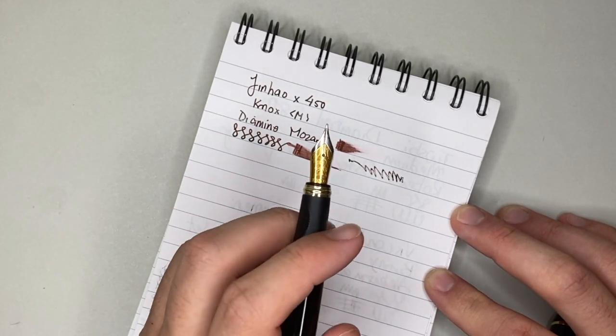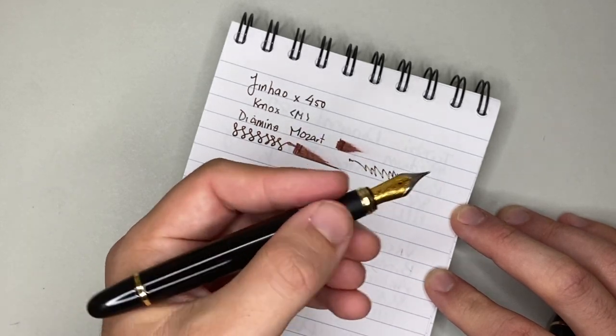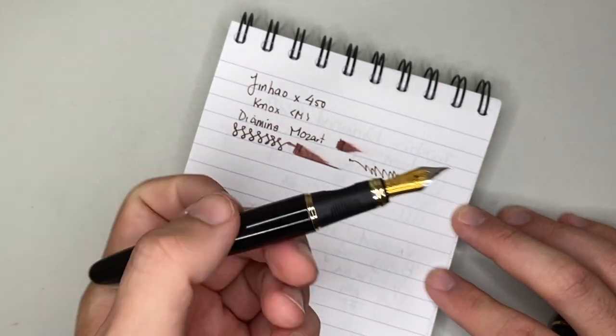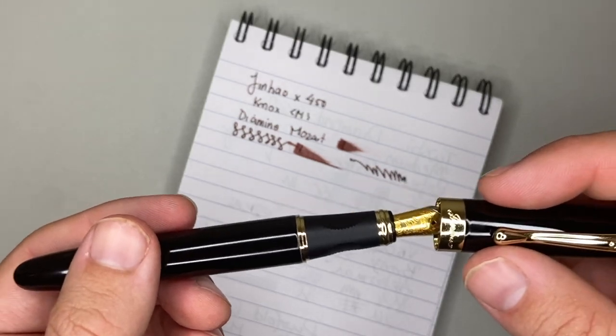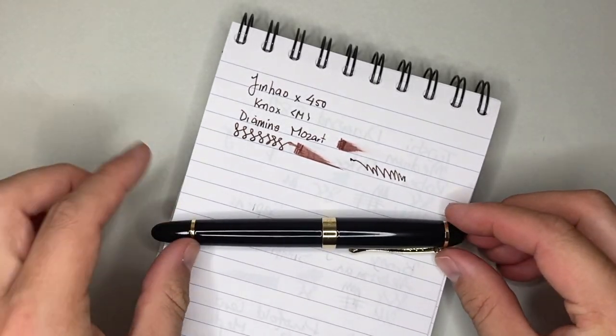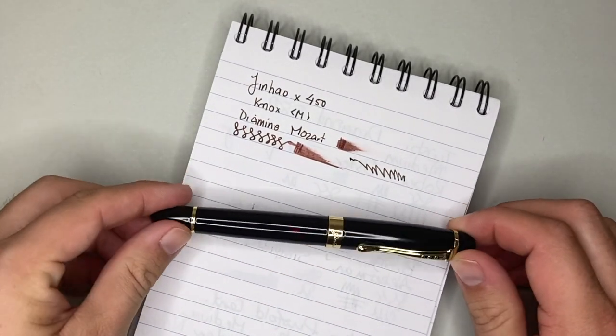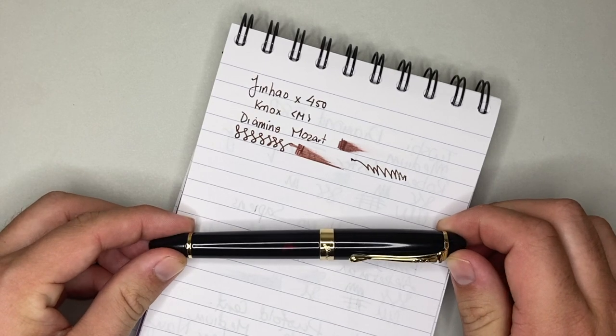And the fact that I can get these nibs, or could get these nibs relatively affordable and put them on a pen body that I like, that has a nice weight, it was always going to be a good option. So that was the Jinhao X450 with a Nox medium nib. One of the first pens from my collection.